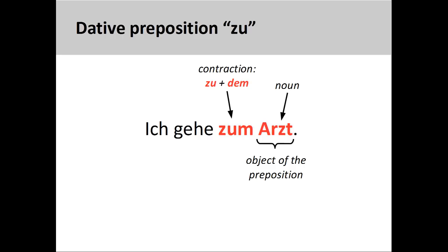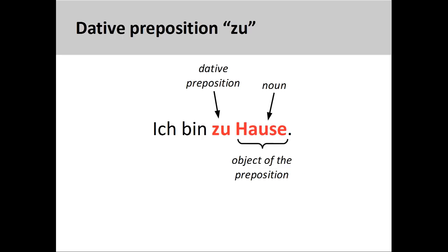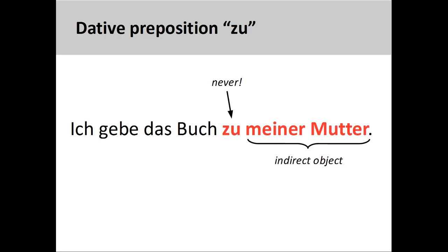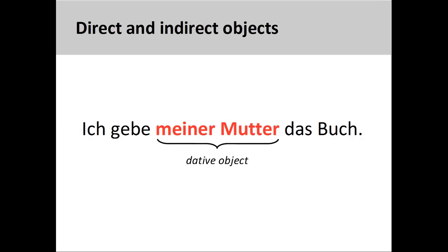The preposition 'zu' is used to describe motion toward locations, people, and events. For example, 'ich gehe zum Arzt' — I'm going to the doctor. Note that 'zum' is the contraction of the preposition 'zu' and the definite article 'dem.' 'Zu' is also used colloquially in 'ich bin zu Hause' — I am at home. Finally, it is tempting to use 'zu' to mark the indirect object of a sentence, as in 'ich gebe das Buch zu meiner Mutter' — but you must never do this. Instead, the dative case by itself is enough to mark the indirect object: 'ich gebe meiner Mutter das Buch' — I give the book to my mother.